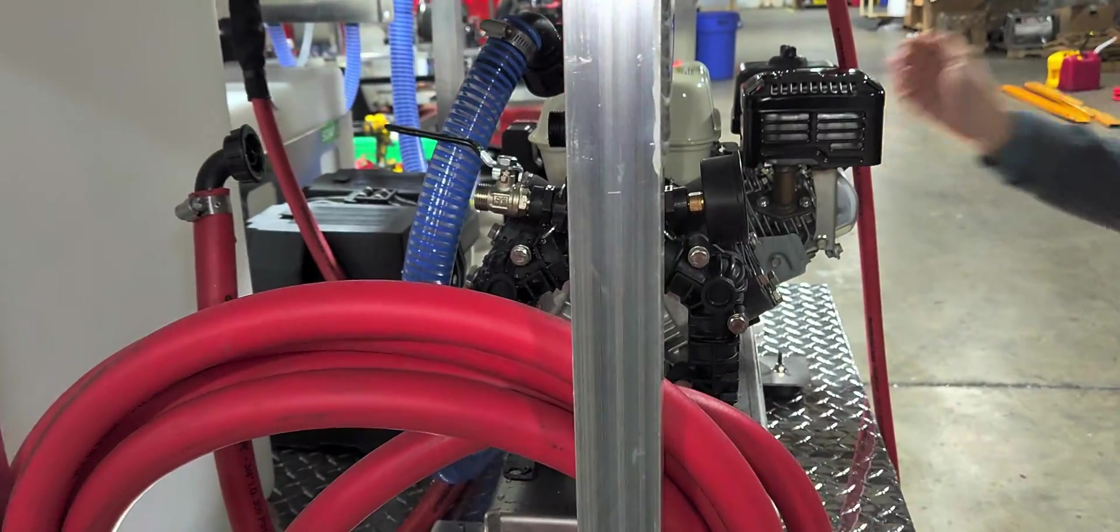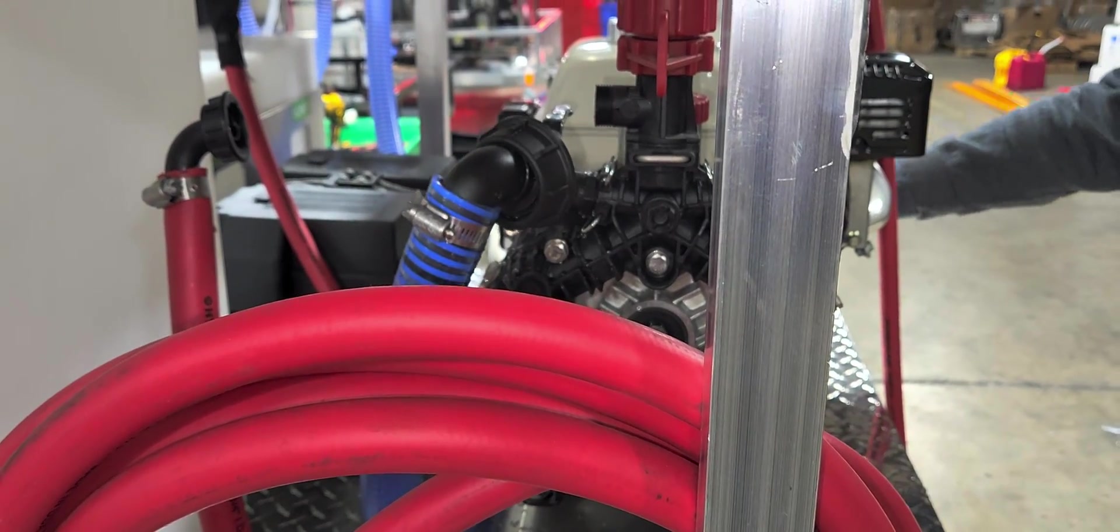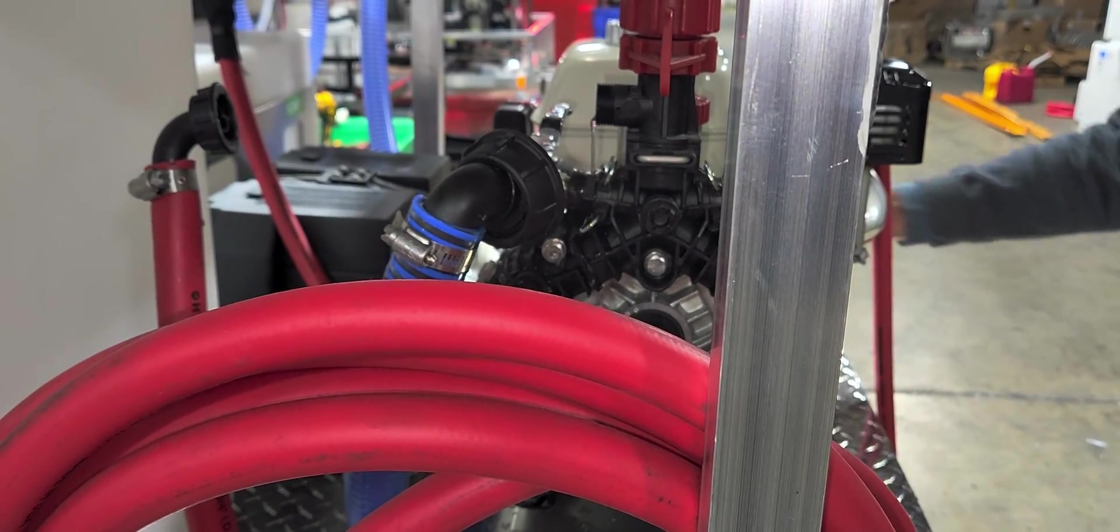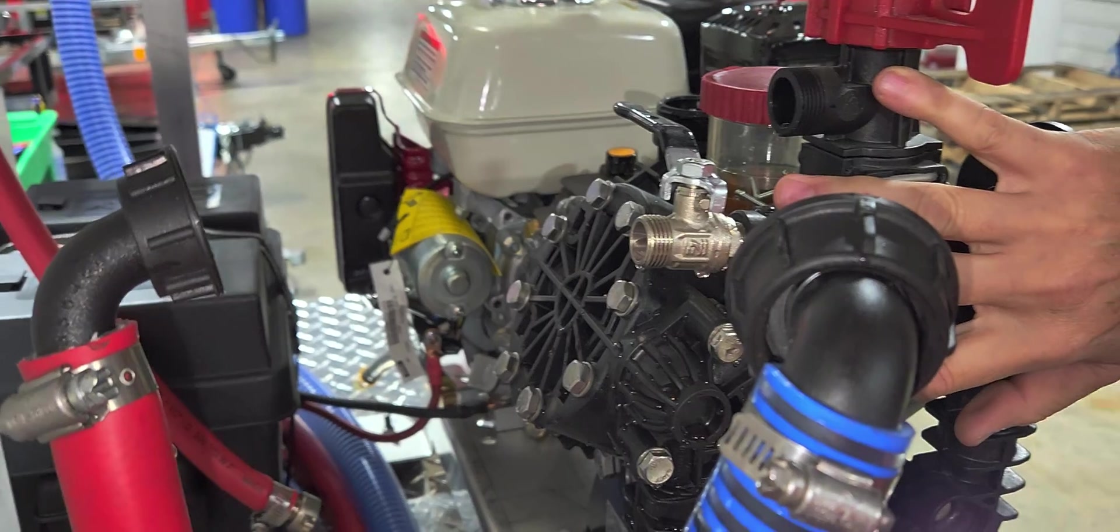And again, pull until it comes out of the bypass. First it's going to be water, and then you've got pink fluid. So that ensures the regulator unloader is winterized as well.